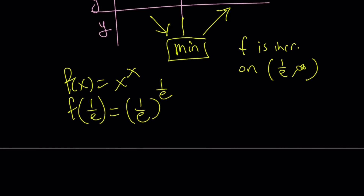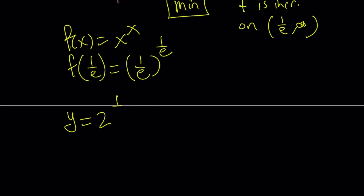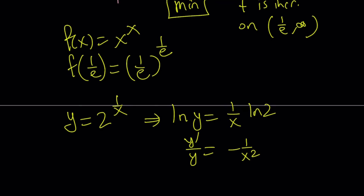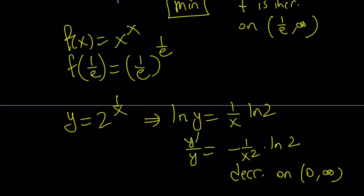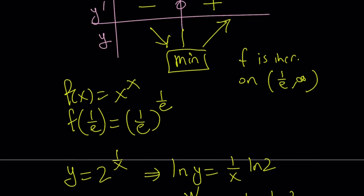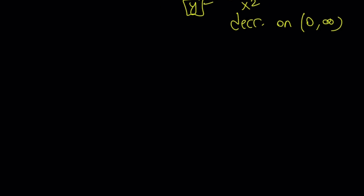Now let's look at the other function: y equals 2 to the power of 1 over x. Taking ln of both sides, ln y equals 1 over x times ln 2. Differentiating gives y prime over y equals negative 1 over x squared — the derivative of 1 over x is negative 1 over x squared. Setting the derivative equal to 0 gives nothing, because this function is always decreasing. It decreases on 0 to infinity, since negative 1 over x squared is always negative and y is always positive. So we have an increasing function and a decreasing function, meaning they should intersect at only one point — that should be the only solution.